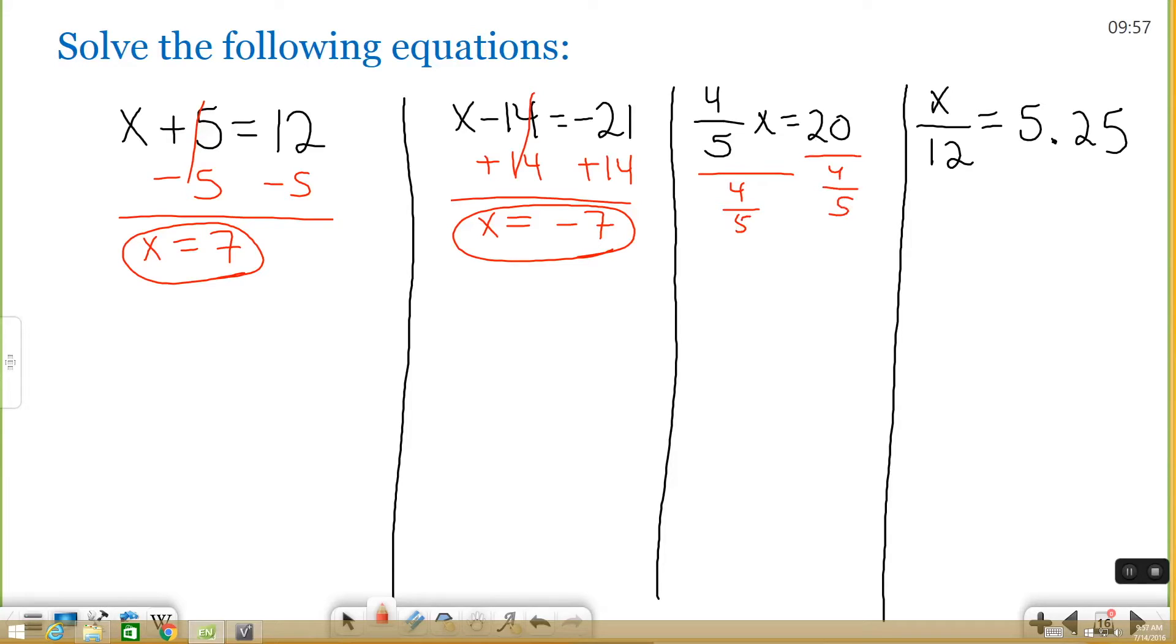There's a trick when you're dividing by a fraction. What you do is you take the fraction, you flip it, and you multiply. So on the left, these are just going to cancel out. So I know that's good. But on the right, I have 20 divided by 4 fifths, which is the same thing as 20 times 5 over 4.